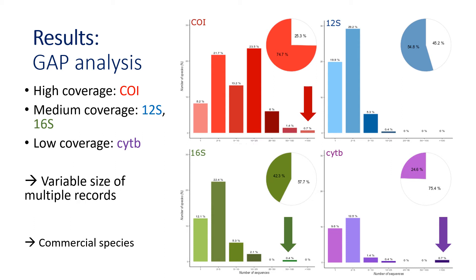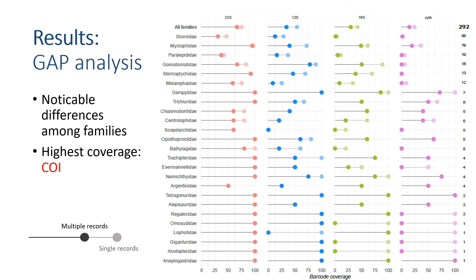For COI, 16S, and cytochrome B, we have a very small proportion of fishes that have a high number of records — more than 100, more than 50, and so on. These species are all commercial, which is the logical explanation for these values. A deeper analysis of mesopelagic families provides more reliable information regarding sequence availability. Light dots represent single records and darker dots represent multiple records. In general terms, COI gene has the best coverage across all families.